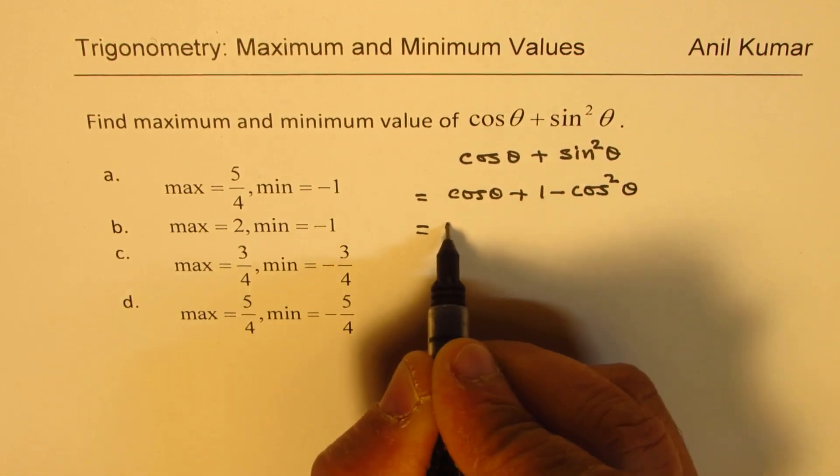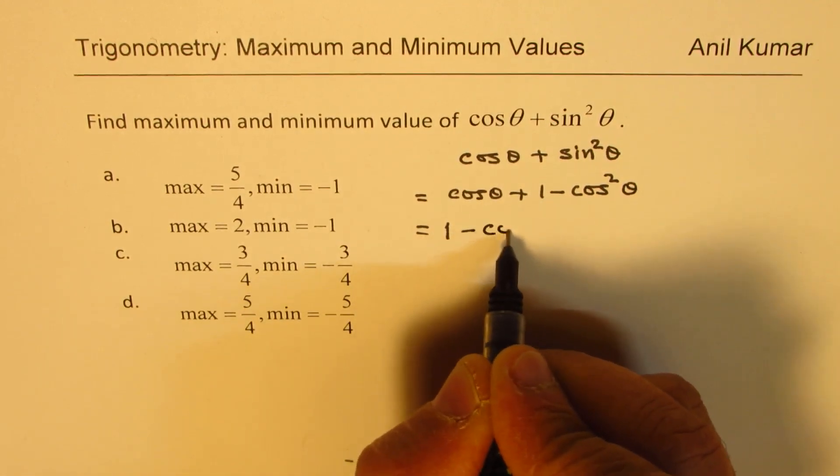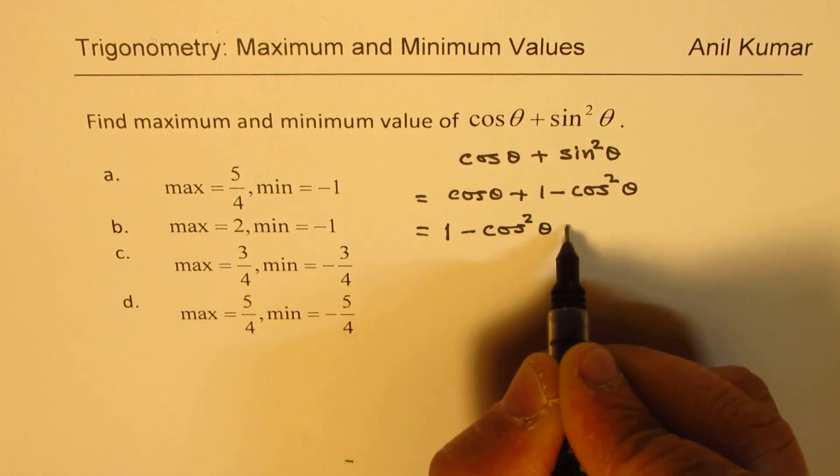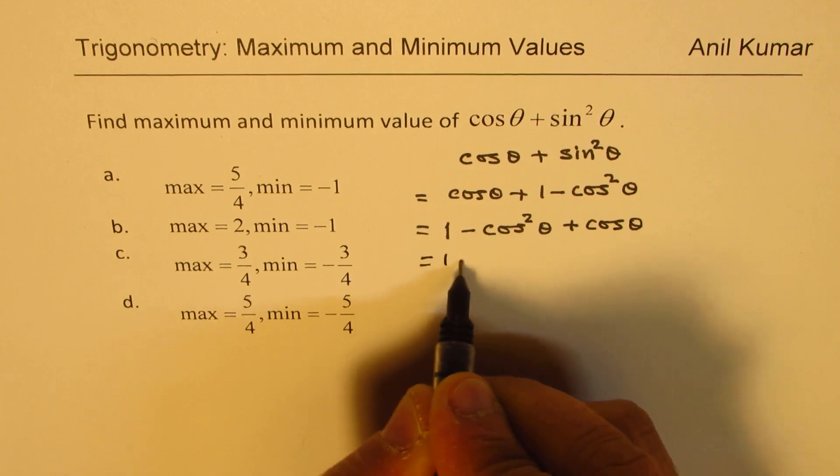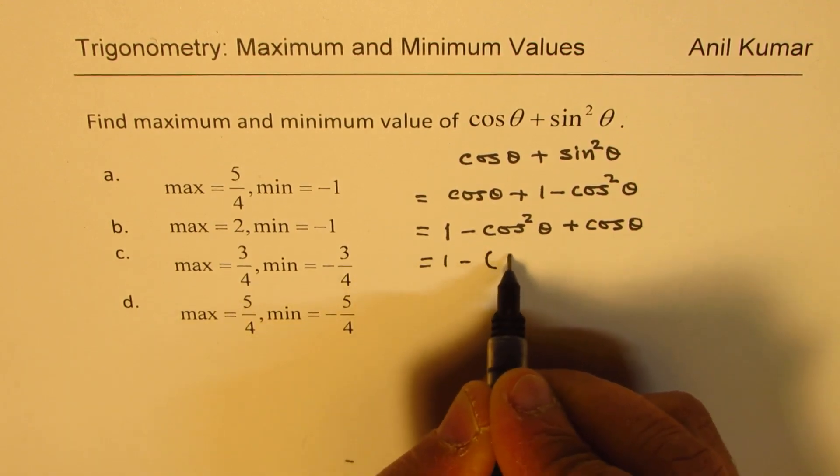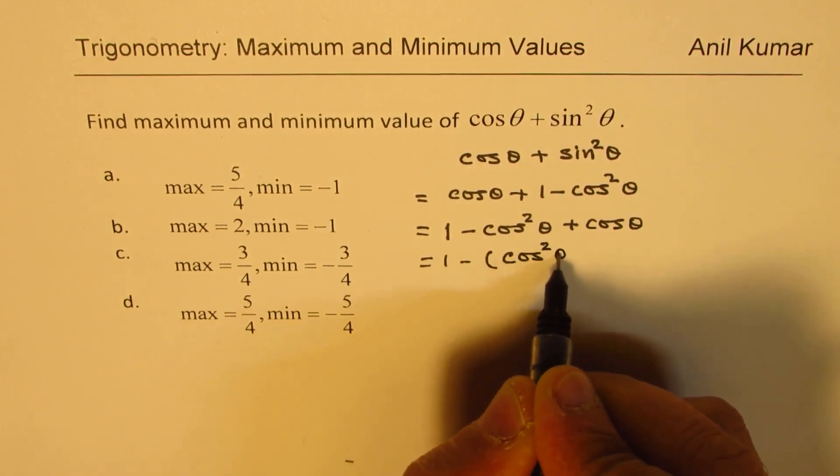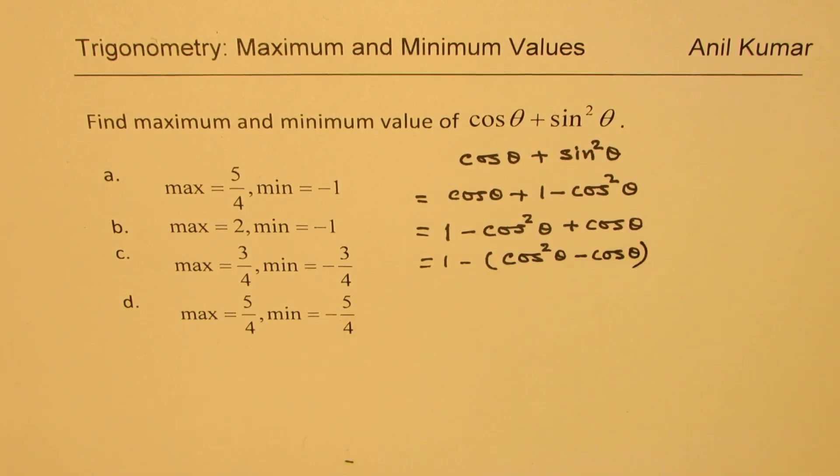Now rearrange. Take 1 to this side. So we have -cos² θ + cos θ. We can take minus common. So we get 1 - (cos² θ - cos θ).